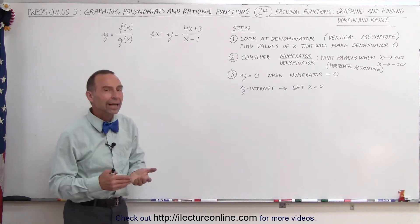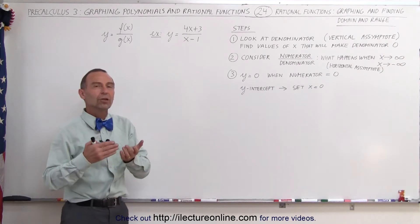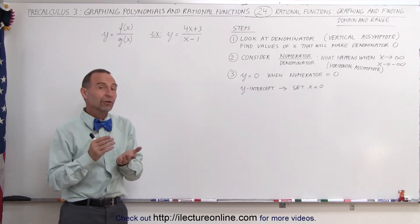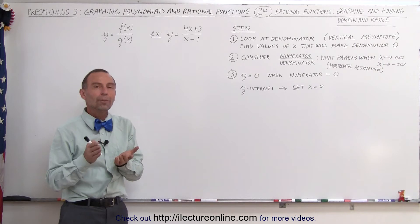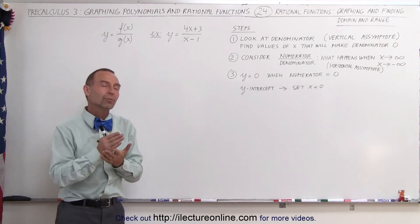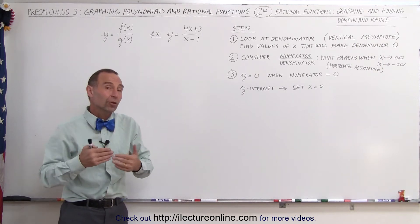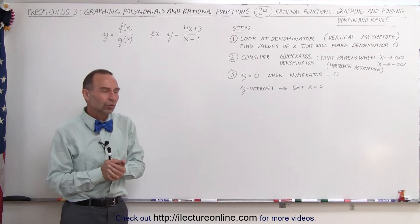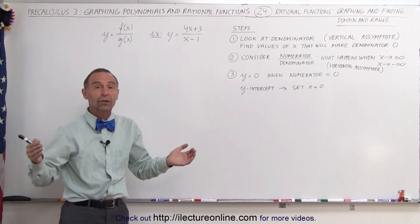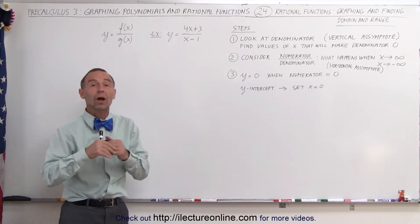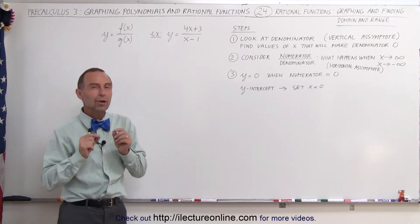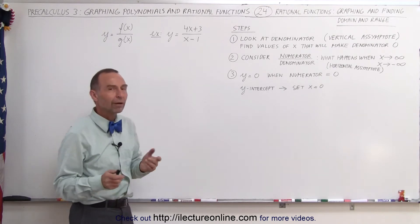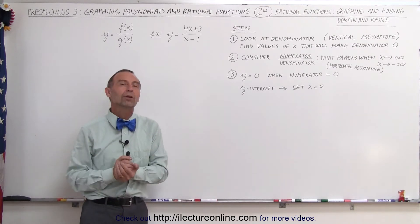So how do we go ahead and graph that? Typically with rational functions, there will be asymptotes — vertical asymptotes, and potentially also horizontal asymptotes. Those are places where the graph cannot cross, and we need to be aware of and find those. We can do that by following the steps below.